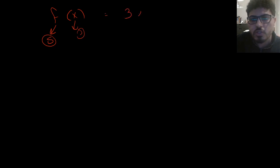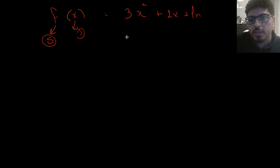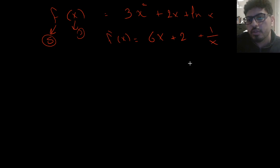Let's say f of x is a scalar-valued function and x is a single variable. This is the easiest situation. Here, f(x) = 3x² + 2x + ln(x). Taking the partial derivative is simple: f'(x) = 6x + 2 + 1/x.